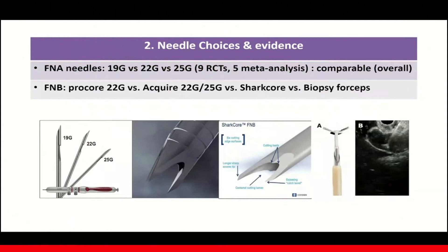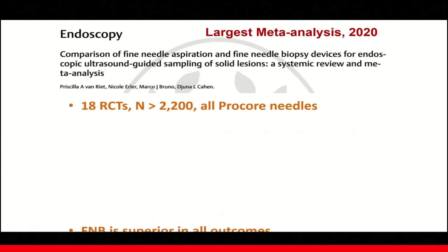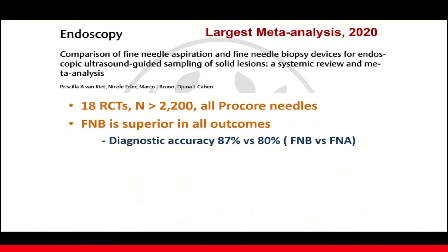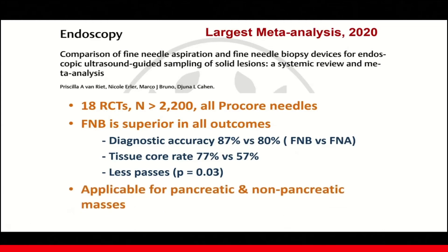Moving next to needle selection: based on nine RCTs and five meta-analyses, 22 gauge and 25 gauge are comparable in terms of diagnostic performance. What I want to show you is this largest meta-analysis to date comparing FNA versus FNB needles for solid lesions. The results show that FNB needle is superior to FNA in all outcomes — including diagnostic accuracy, tissue core rate — and it requires fewer passes. This study included 18 RCTs with over 2,000 patients, and all biopsy needles were Procore needles. These results are applicable for pancreatic and non-pancreatic masses.